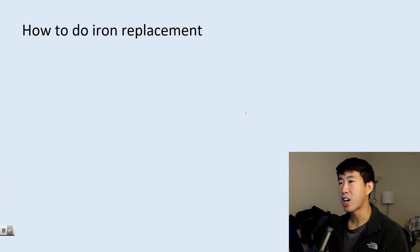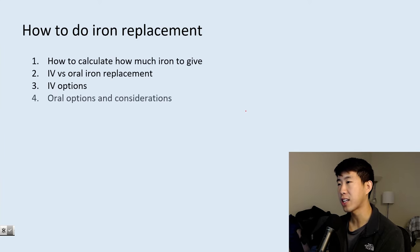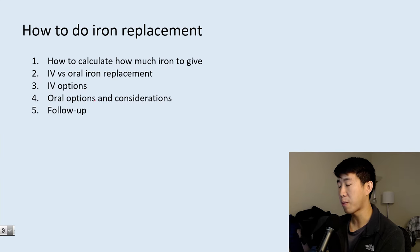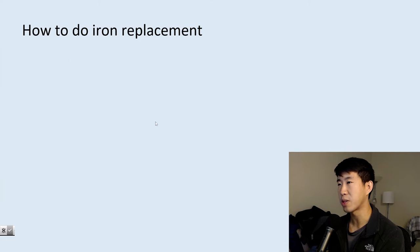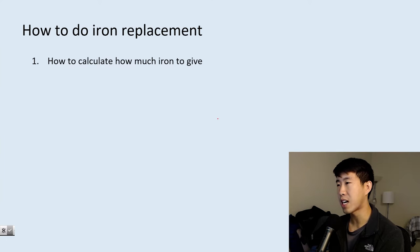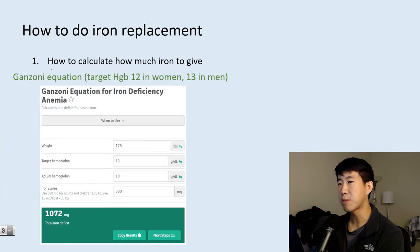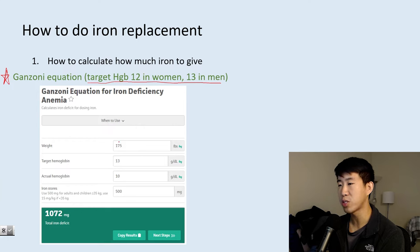Now let's talk about how to actually replace somebody's iron. We'll cover calculating how much iron to give, IV versus oral iron and how to choose, IV and oral options with common side effects, common pitfalls, and follow-up. To calculate dose, use the Ganzoni equation, which you can find on MDCalc. You want to target a hemoglobin of 12 in women or 13 in men.